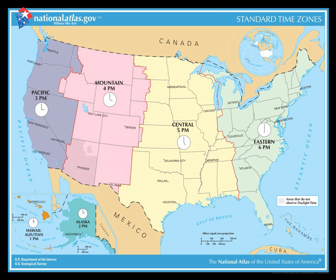Starting March 11, 2007, DST was extended another four to five weeks, from the second Sunday of March to the first Sunday of November. The change was introduced by representatives Fred Upton and Edward Markey and added to the Energy Policy Act of 2005. The House had originally approved a motion that would have extended DST even farther from the first Sunday in March to the last Sunday in November, but Senators Jeff Bingaman and Pete Domenici agreed to scale back the proposal in conference committee due to complaints from farmers and the airline industry.